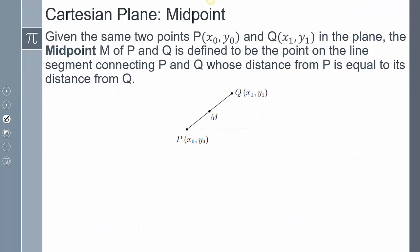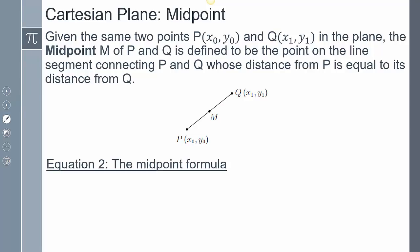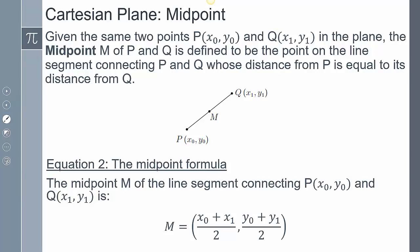Now let's examine the midpoint formula. Given two points P₀ and Q₀ in the plane, the midpoint M of segment PQ is the point on the line segment where the distance from P equals the distance from Q — exactly halfway. To find the midpoint, add the two x-values and divide by 2 for the new x-coordinate, and add the two y-values and divide by 2 for the new y-coordinate.